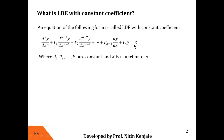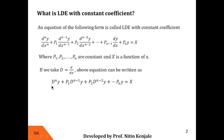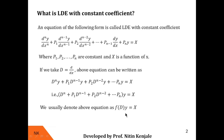The RHS part is a function of x, which we call capital X. Now, if we take capital D equal to d/dx, then this same differential equation can be written as D^n·y + p1·D^(n−1)·y + p2·D^(n−2)·y + ... + pn·y = X. Since y is a common variable on the left-hand side, we can factor it out, giving us f(D)·y = X, where f(D) is the bracketed polynomial in D.